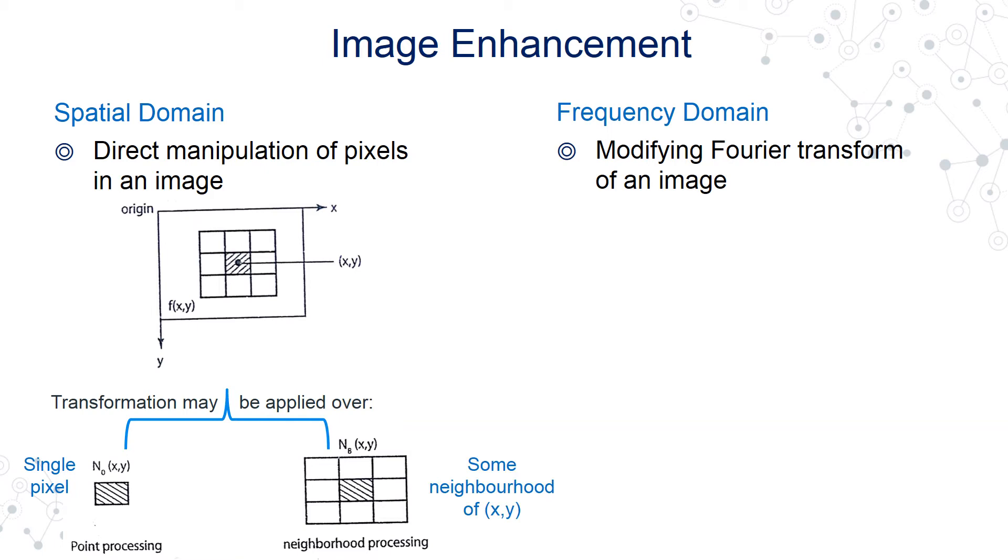That is neighborhood processing. And so far, we had studied single pixel transforms like image negative, power law transformation, log transformation.